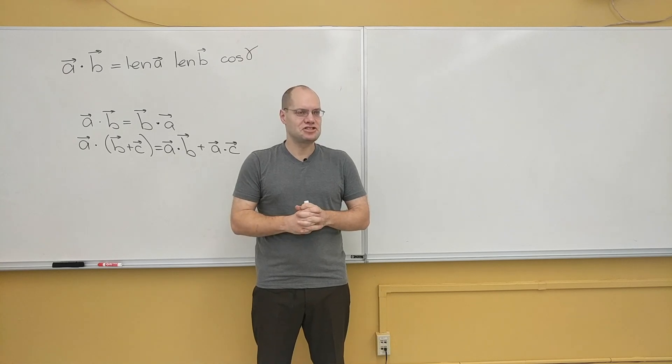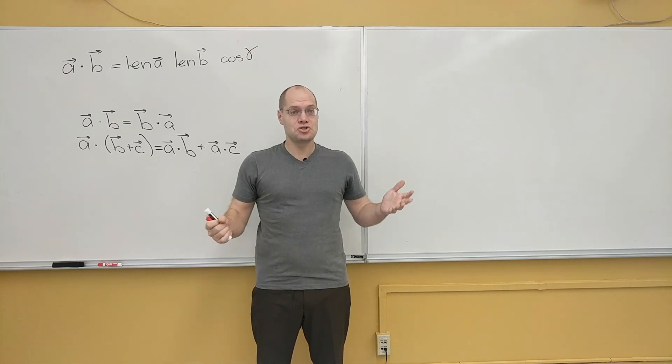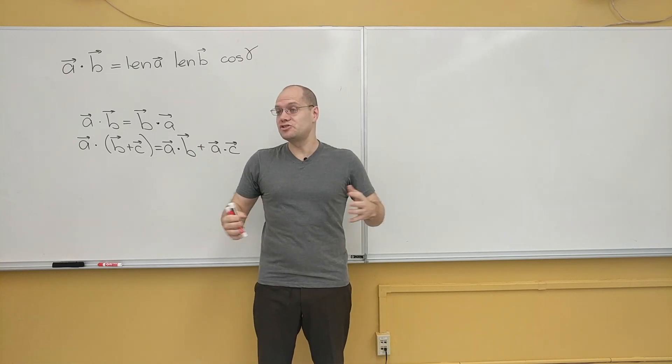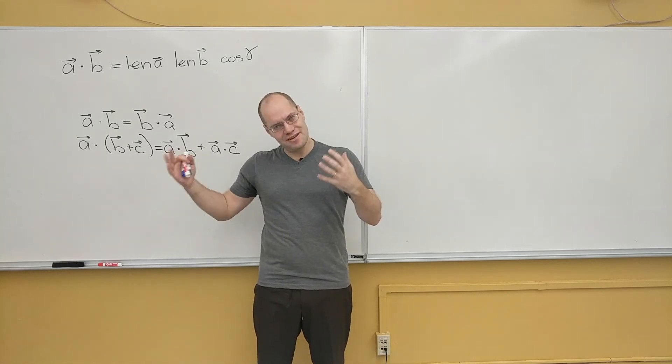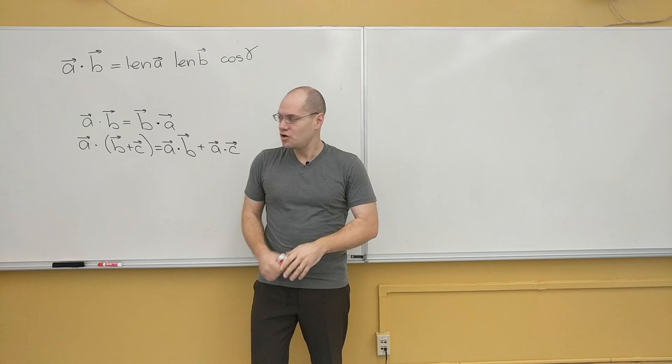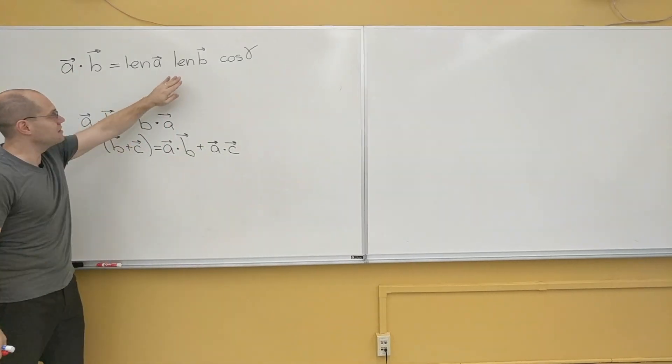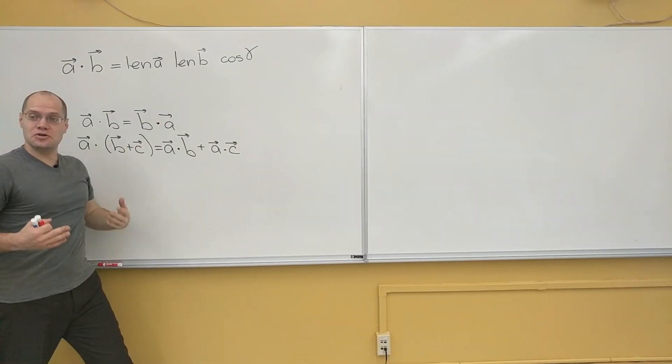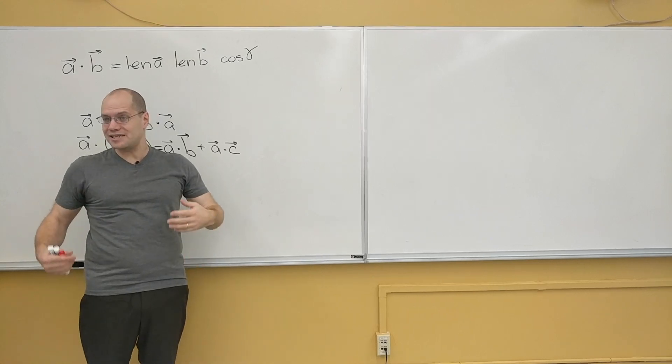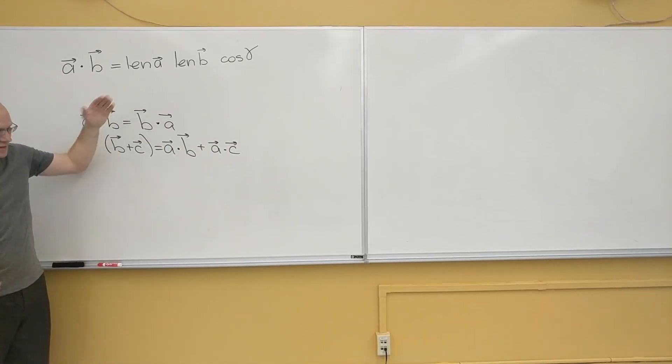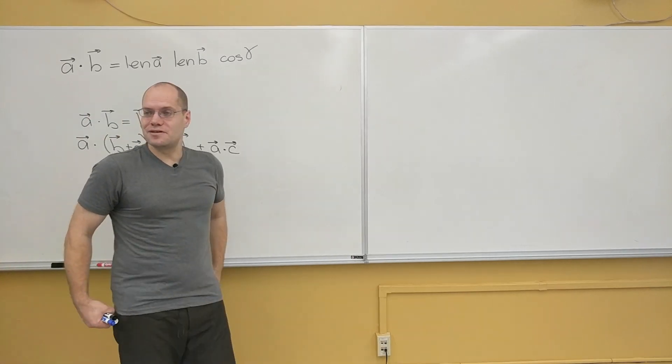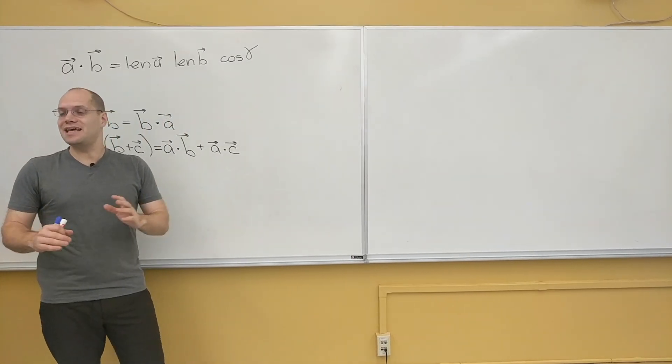So here are the three definitions of the dot product. Each one of them is great in its own context, and each one of them is perfect for its own applications. So the first one, the one that physicists use, and the one that we will use exclusively in this class as the definition of the dot product, is this one. Then, if you remember, in linear algebra, linear algebra does a fascinating thing.